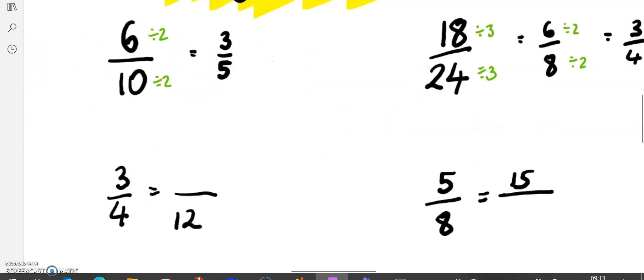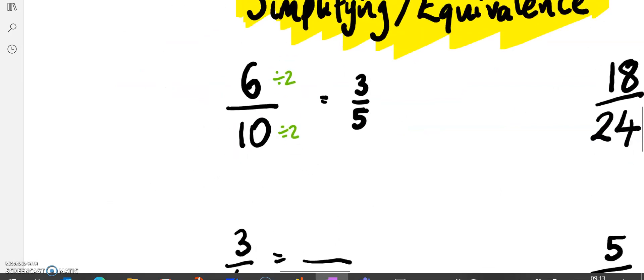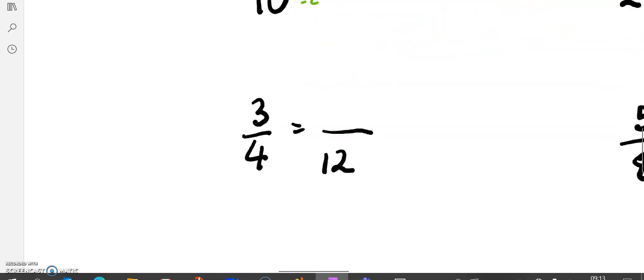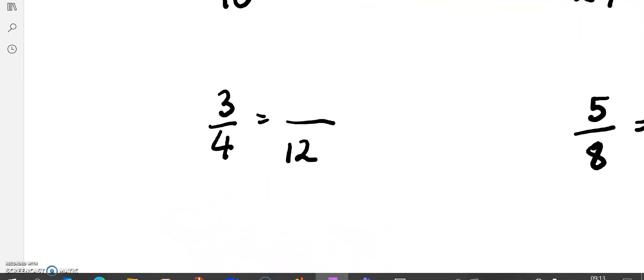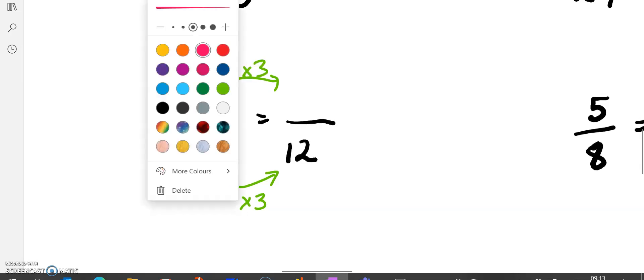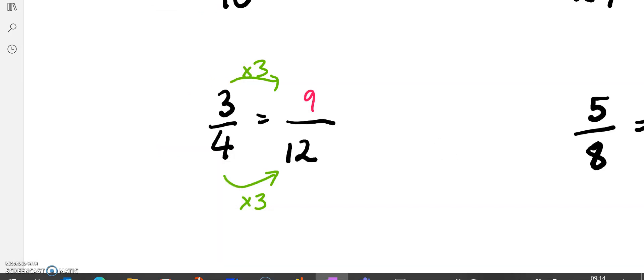So we can simplify fractions, and we can also make equivalent fractions. Just as we know here, 6 tenths is the exact same as 3 fifths, it just looks a bit different. So we've got 3 quarters is equal to how many 12ths? These will have the exact same value. In simplification, we look to division. For equivalence, we're looking for a multiplicative relationship. So we ask, how do we get from here to here? Well, we times by 3. We're always looking for a multiplication. So what I need to do with the numerator is times by 3, and that's going to give me 9 twelfths. 3 quarters is the exact same as 9 twelfths.